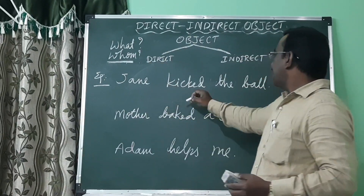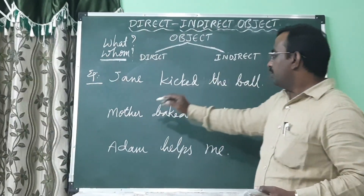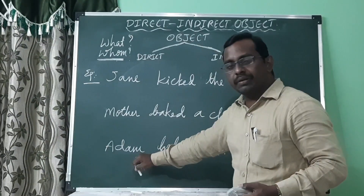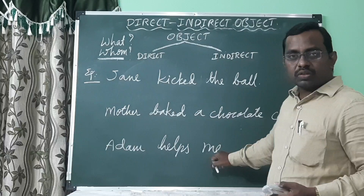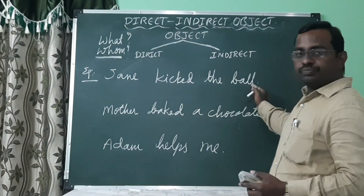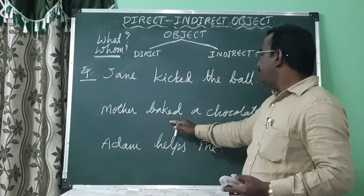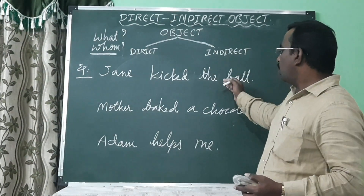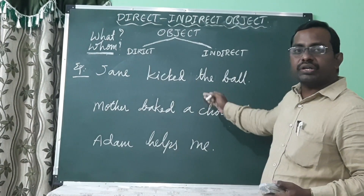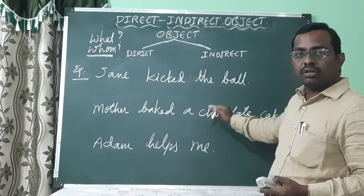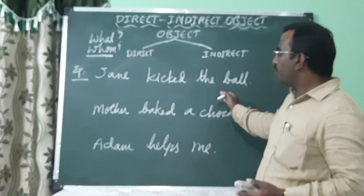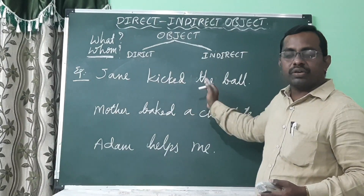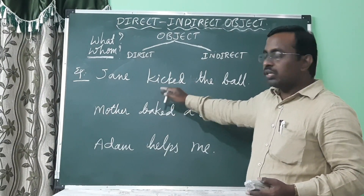Jane kicked the ball. Mother baked a chocolate cake. Adam helps me. The ball, a chocolate cake, and me — these are the direct objects. They always follow the transitive verb.